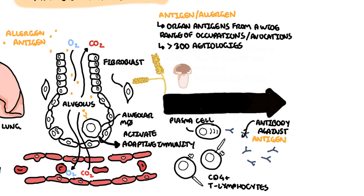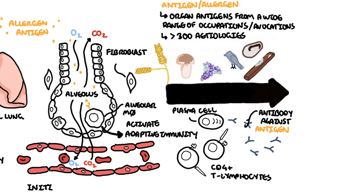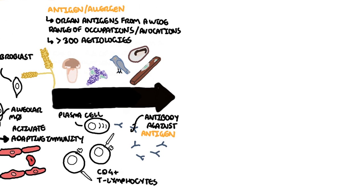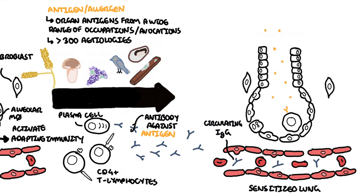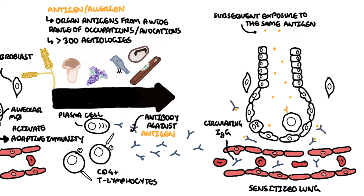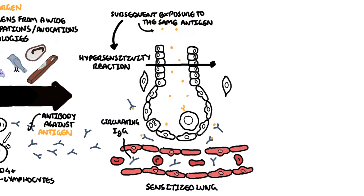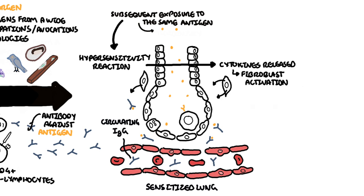Occupations dealing with grain, mushrooms, grapes, vines, birds, molds, and shellfish can trigger hypersensitivity pneumonitis. Once antibodies develop to a particular allergen or antigen from the environment, the lungs become sensitized. Therefore, on subsequent exposure, the body's antibodies will bind to these antigens and mount an inappropriate immune response — a hypersensitivity response. This hypersensitivity reaction results in cytokine release, which activates fibroblasts and then fibrosis.